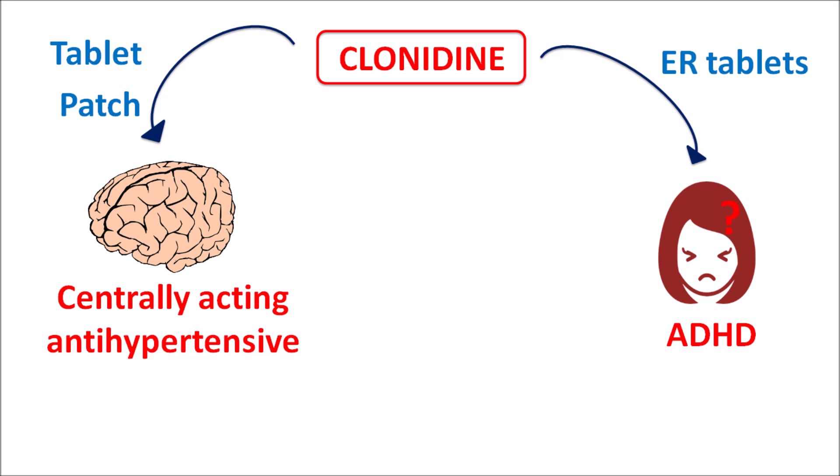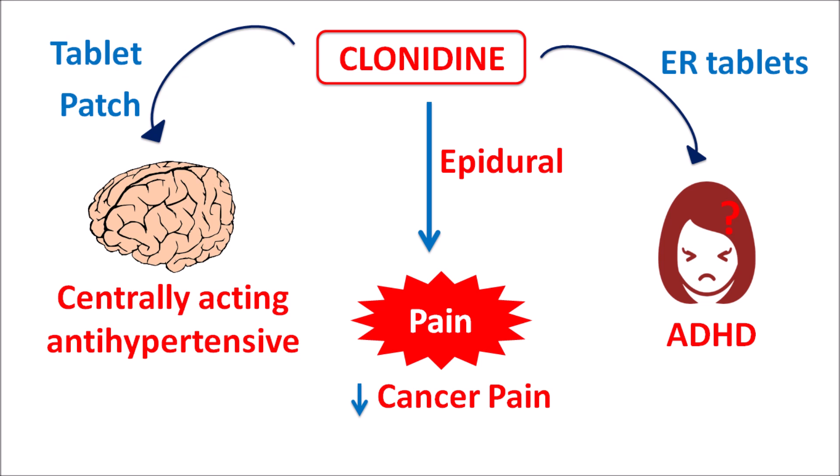In such conditions, Clonidine can be given to reduce irritability in children. Clonidine can also be given by the epidural route as an analgesic — not as the main analgesic, but as an adjuvant along with opiates to control cancerous pain. Apart from these, this drug can also be used to control withdrawal symptoms of opiates, and in anxiety disorders where sympathetic activation is increased.